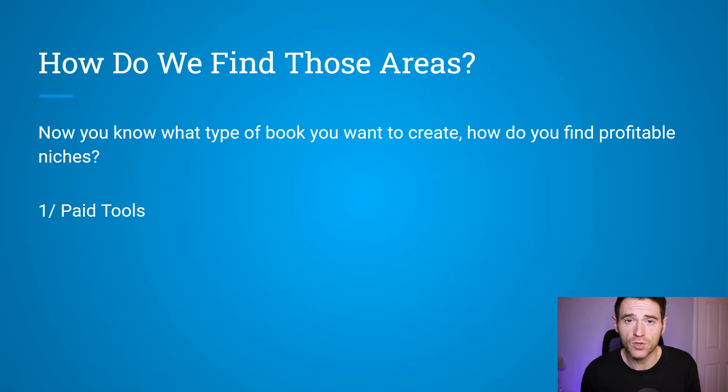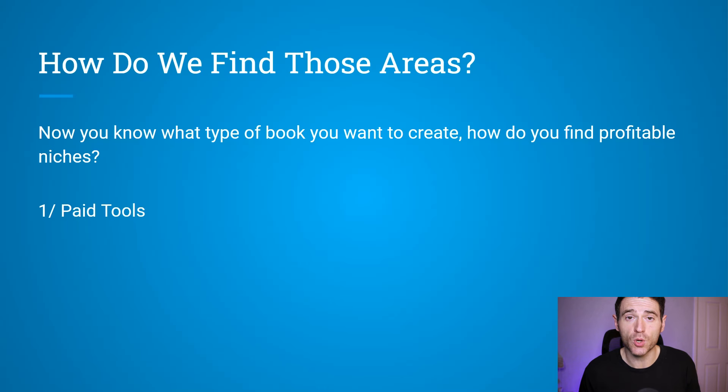There are two main ways to do niche research. One is using paid tools — one of the best is Helium 10. It can be a little pricey but it saves you so much time and effort, and in my opinion it's the closest thing out there to guaranteeing results. The second way — and I'll do a video on this shortly — is just searching around on Amazon. Compared to paid tools this takes a lot of time and effort, but it doesn't cost you a cent. The premise is finding the types of books you want to create, seeing what's out there, looking at the bestseller rank (the lower the rank, the more it's selling), and looking at book titles to identify search terms.